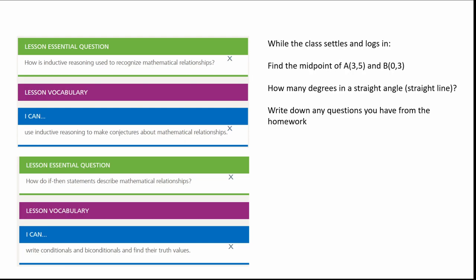Before we move forward, I want you to find the midpoint of point A, which has a coordinate of (3, 5), and point B, which has a coordinate of (0, 3). Also, how many degrees are in a straight angle or a straight line? Write down any questions you have from the homework. If you're sitting in class with me, go ahead and solve those. Ask the people in your Zoom meeting what they got, and if you can't reach a consensus, message me and I'm more than happy to help.